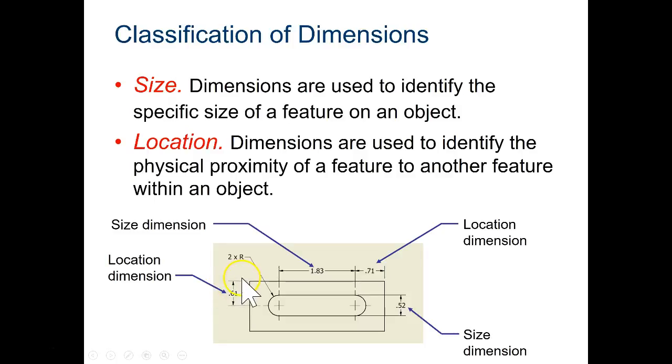Location is helping us understand relationships between edges and centers and things like that. So you can see right here, the location dimension is telling us from this edge, this is where that center has to be. And over here we can see that these two lines are telling us how wide the slot has to be.